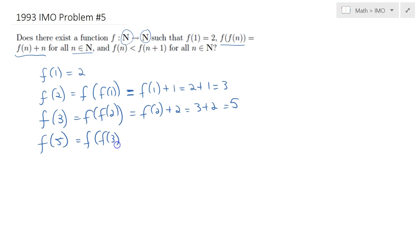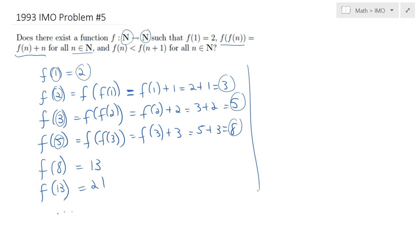We can go on like this. f(3) equals f(f(2)) equals f(2) plus 2, which is 3 plus 2 equals 5. Then f(5) equals f(f(3)) equals f(3) plus 3, which is 5 plus 3 equals 8.